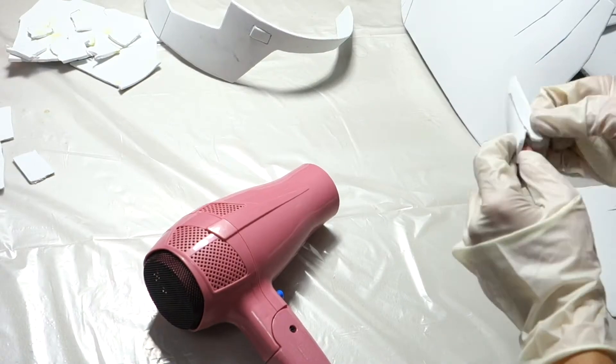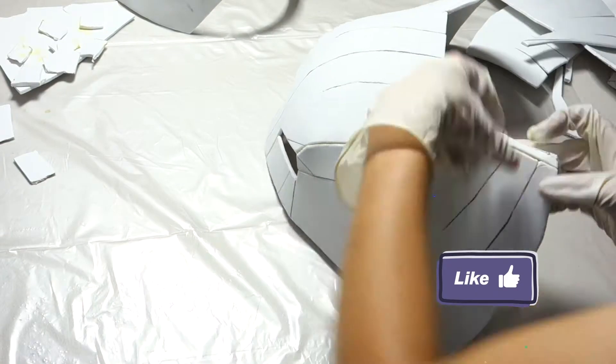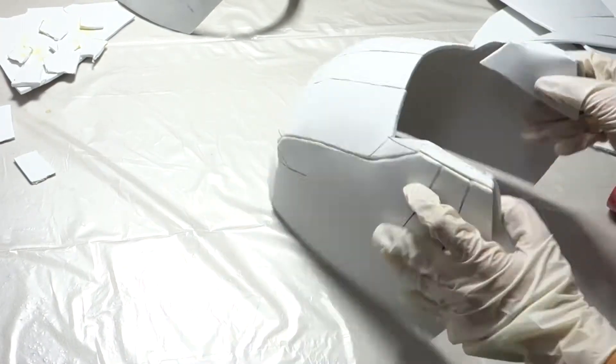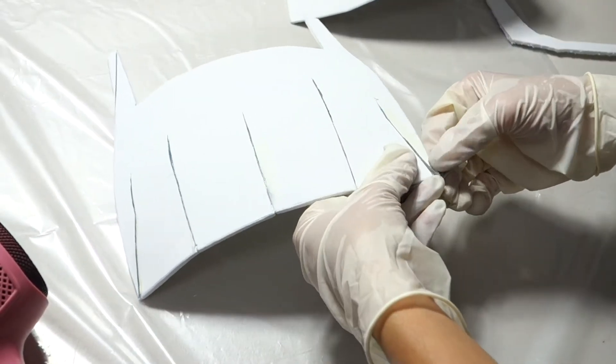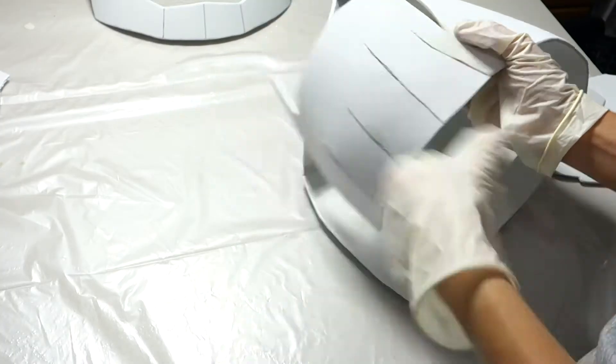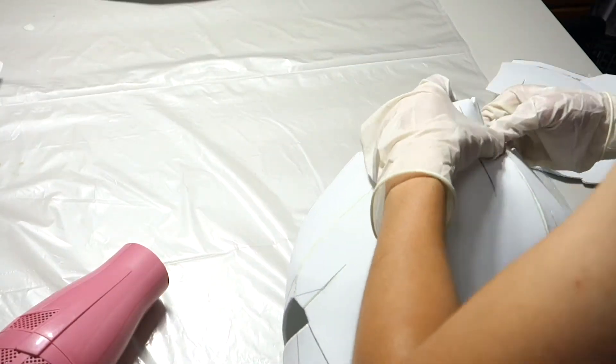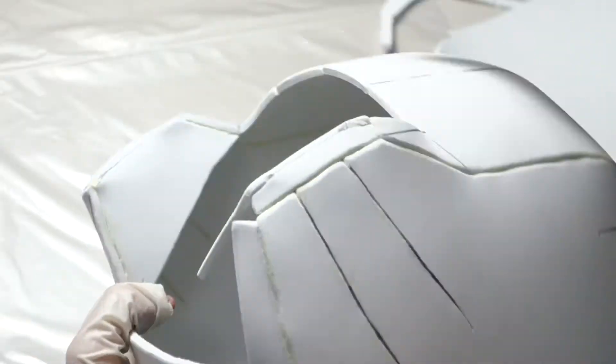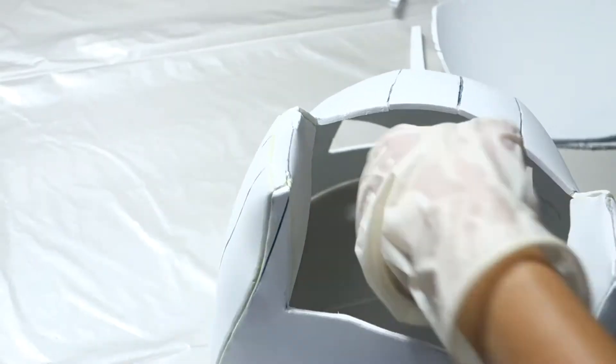Next are the ear pieces. Like the front of the helmet, glue the back helmet's crevices together. Then attach it to both sides of the helmet. Going back to the ears, glue its left and right sides behind the front and back helmet pieces. This will make it easier to slot in the top of the helmet.